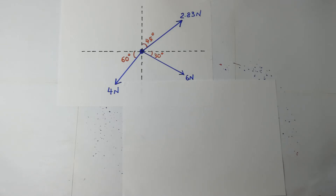After finding the resultant force along the X and the Y, we are going to draw a triangle of forces to help us locate where the resultant force is passing. Then we'll use Pythagoras theorem to find the resultant force, and thereafter find the direction of the resultant force.